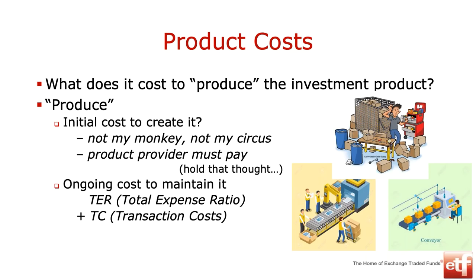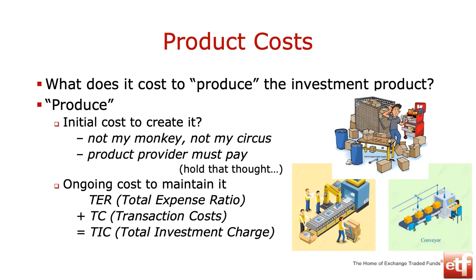But what is a TER, and why is that not good enough in terms of cost disclosure? Not good enough to the extent that we now have TC — transaction costs get added to it — and that gives us our TIC, the total investment charge. Increasingly, you will now find on fact sheets and minimum disclosure documents of investment funds that they will disclose a TIC for you, the total investment charge. But what sits in each of those components?